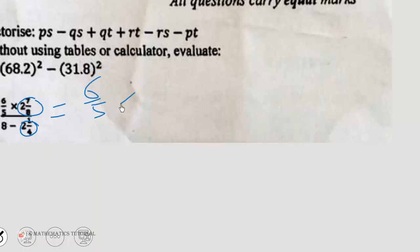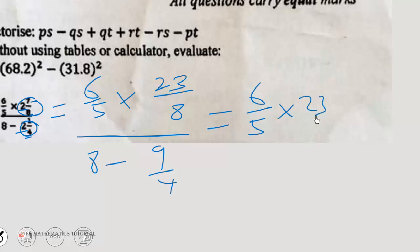So what we are going to do now is that we will convert this one to improper fractions. So we have 6/5 times, 2 times 8 you get 16 plus 7 you get 23/8, all over 8 minus, 2 times 4 is 8 plus 1, 9/4. So let's calculate. We have 6/5 × 23/8 in the denominator. This one is like 8/1, so the LCM is 4. 1 goes into 4, 4 times, times 8 is 32. Then 4 goes into 4, 1 times 9 is 9.